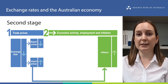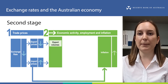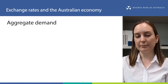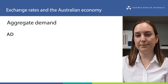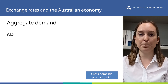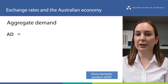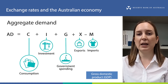Now let's talk about the second stage. By influencing export and import prices, the exchange rate affects the amount of exports foreigners demand from Australia and the amount of imports Australians demand from overseas. Let's have a quick refresher on aggregate demand, or AD. One way to measure aggregate demand is using gross domestic product, or GDP. Aggregate demand breaks down the total level of spending in the economy into different categories: consumption, investment, government spending, exports, and imports.